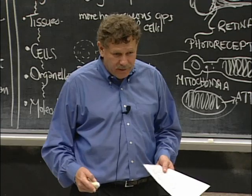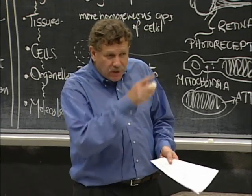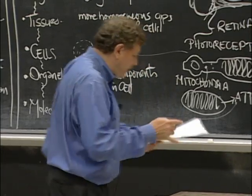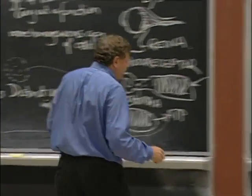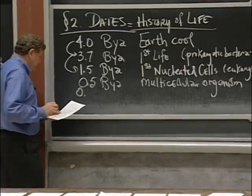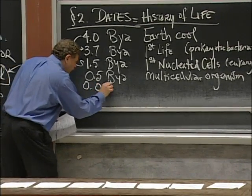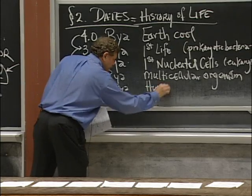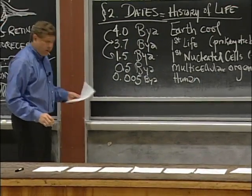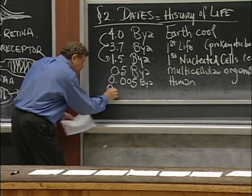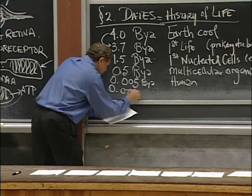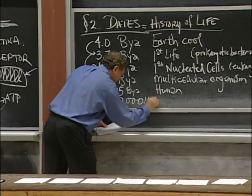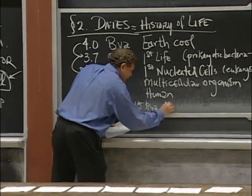That tells us something. That as soon as we see multicellularity, we start seeing huge numbers of different body plans pretty quickly. Very interesting. A few other important dates, two other dates. 0.005 billion years ago are humans, just to put yourself in your place on the scale. And 0.00015 billion years ago, MIT was founded.